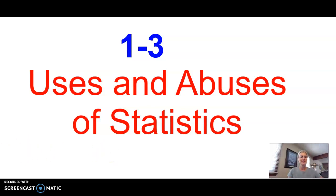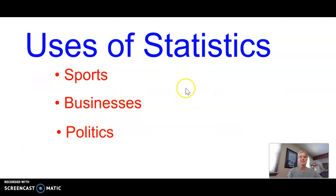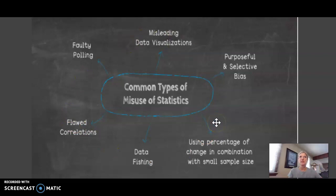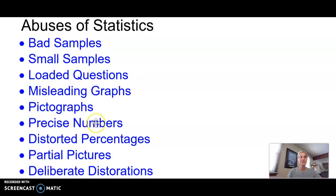Three uses and abuses of statistics. We use statistics in sports, business, and politics. We have common misuses — there's a diagram showing all the different ways we can be misled or have conflicting information. This section is going to talk about how data is good but sometimes gets abused. We're going to focus on the bad, or abuses, of statistics.